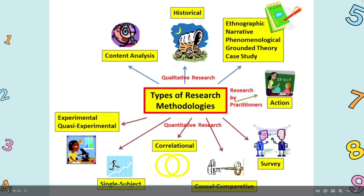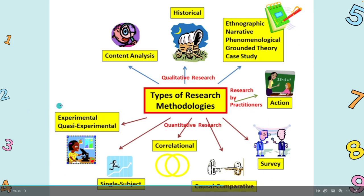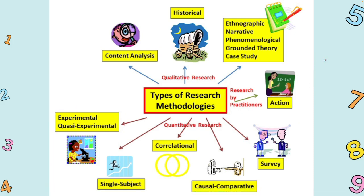So we looked at some of the qualitative type research. Now let's look at more of the quantitative, because this is where statistical analysis is mostly applied. With content analysis, historical, and ethnographic type research — the qualitative research — in the past, there was not any statistics being applied to the data. It was very limited; everything was manually done by the researcher.